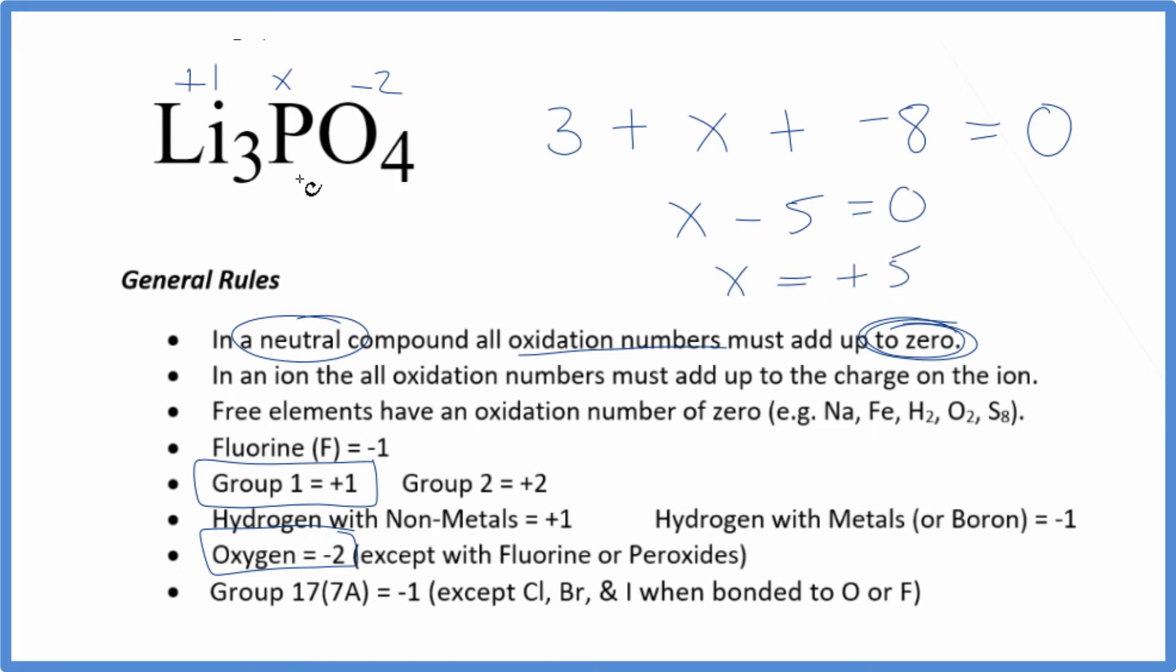So the oxidation number for phosphorus in Li3PO4 is plus five. If you add the oxidation numbers for all atoms in lithium phosphate, you'll get zero because it's a neutral compound.